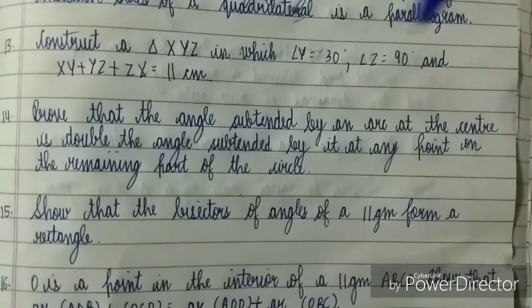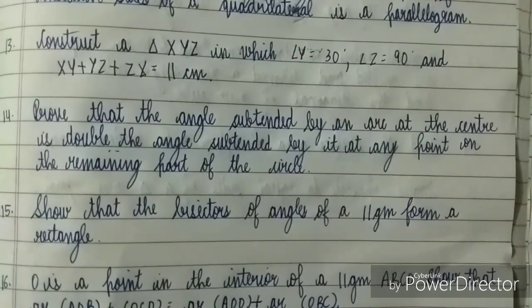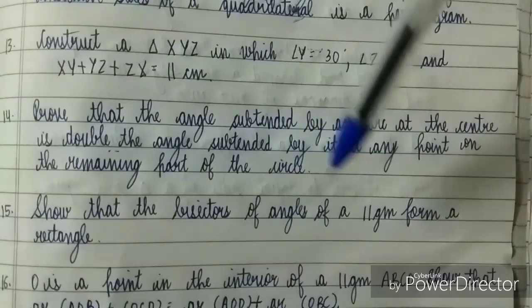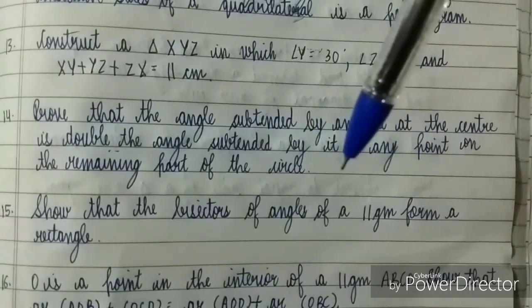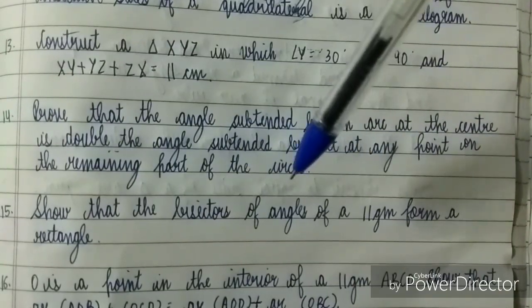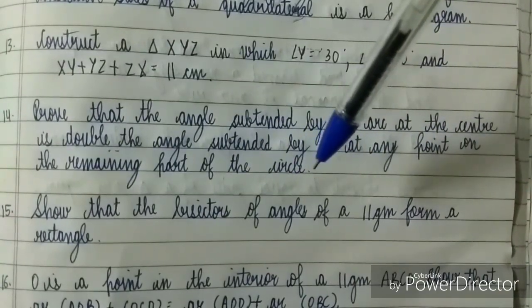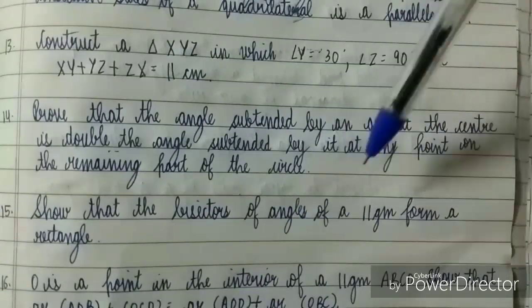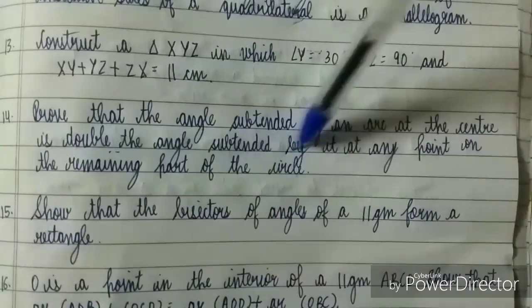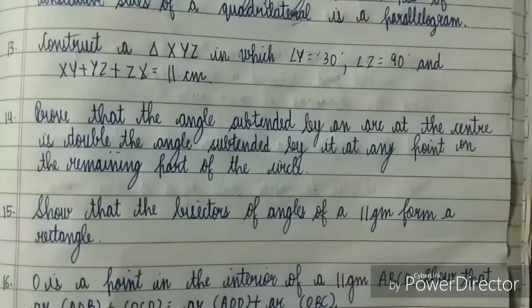Prove that the angle subtended by an arc at the center is double the angle subtended by it at any point on the remaining part of the circle. Next is: show that the bisectors of angles of a parallelogram form a rectangle. Another easy question, also present in examples. Go through the examples of your chapter Quadrilaterals - very important examples are present there.